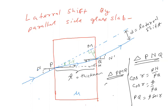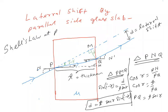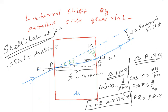अब एक और right angle triangle देखते हैं — triangle PNQ। उसमें चेक करो — sine लेंगे। sin(I − R) कितना? तो D का value कितना हो गया — इसको solve करिएगा तो आ जाएगा। Snell's law at P: 1 × sin I = μ × sin R। आप इनको लेकर replacement का game खेल सकते हैं। तो इसको हम लोग lateral shift की category में डाल देते हैं।